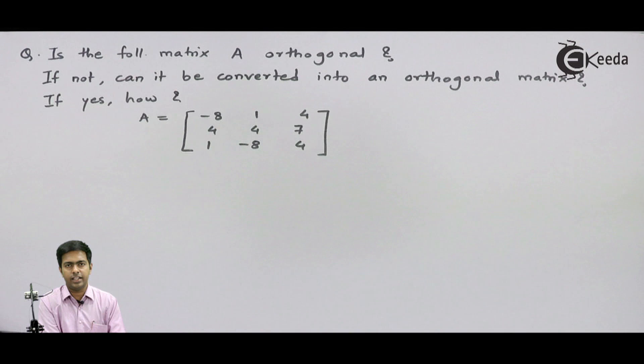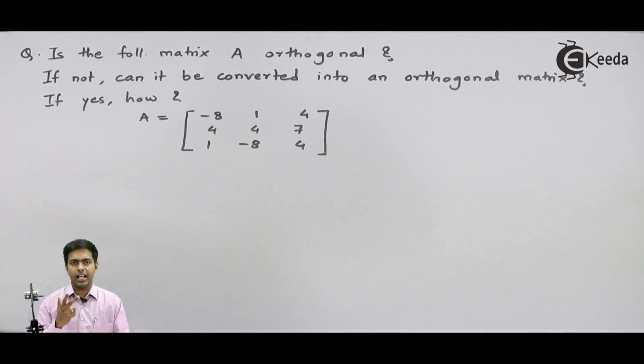Hello friends, in this problem we have been asked three questions. Number one, is the following matrix A orthogonal? Number two, if it is not orthogonal, can you convert this matrix into an orthogonal matrix? And the third question is, if yes, then how?